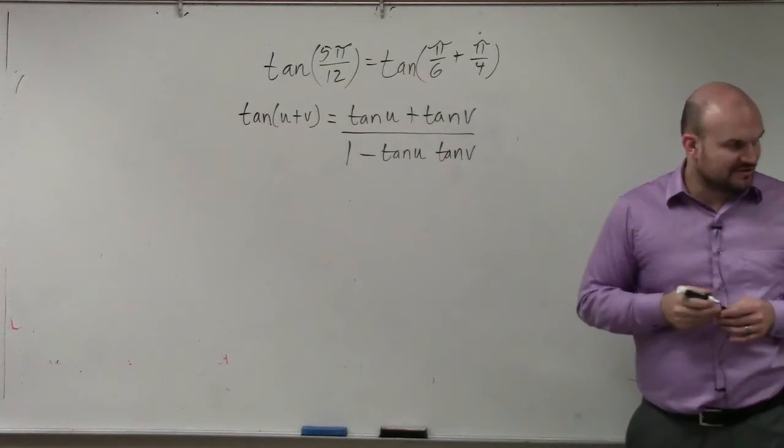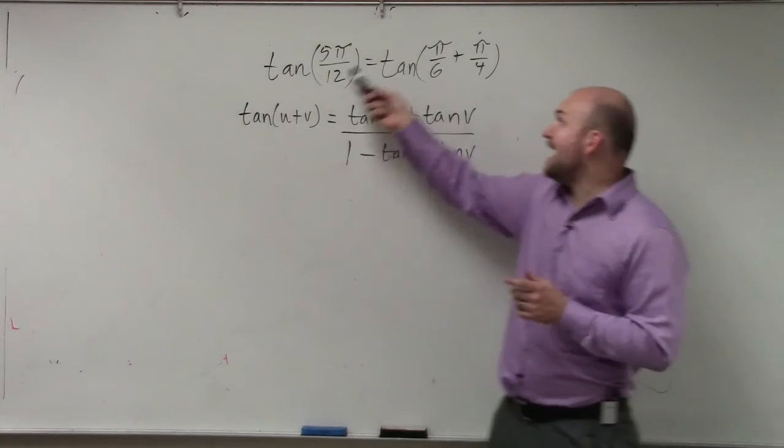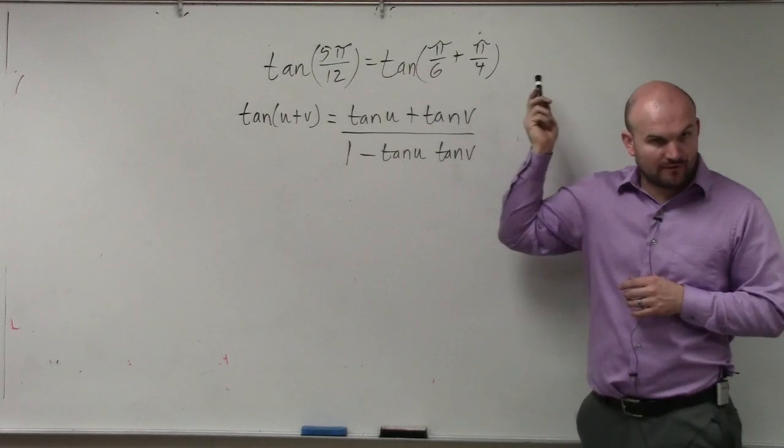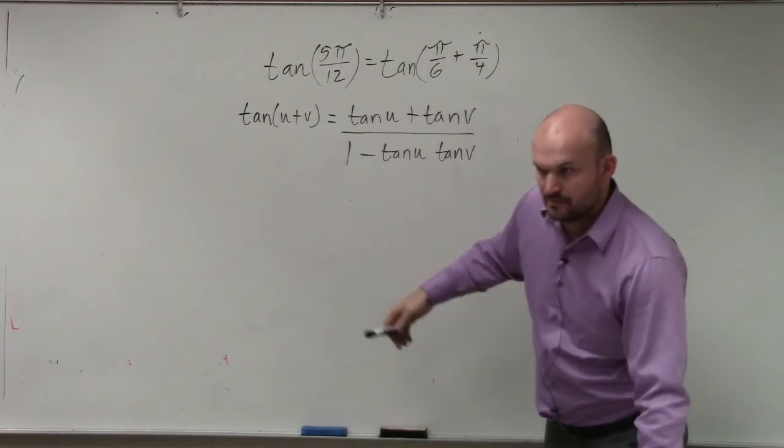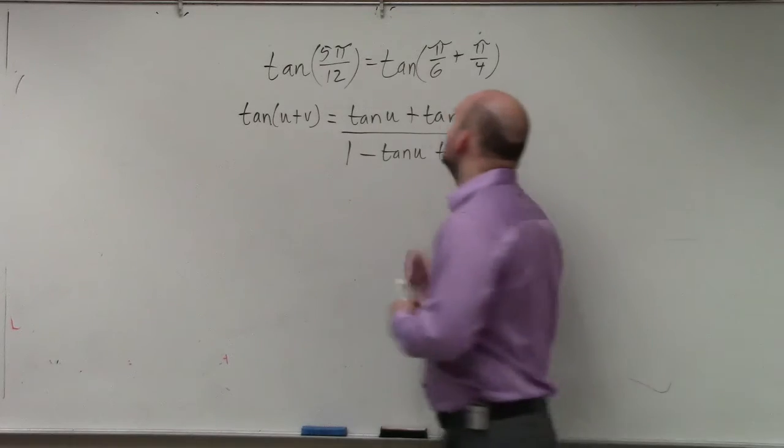That's the formula that's given to you, correct? But we're not adding u and v. We're adding π over 6 and π over 4, right? Because you add π over 6 and π over 4, that gives you 5π over 12. Common denominators.